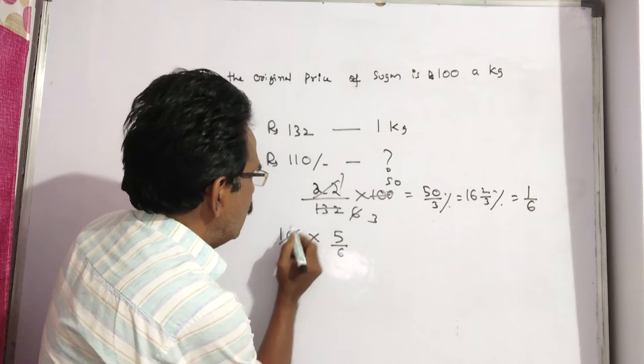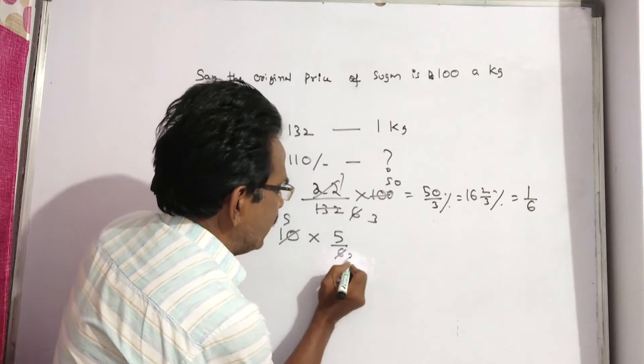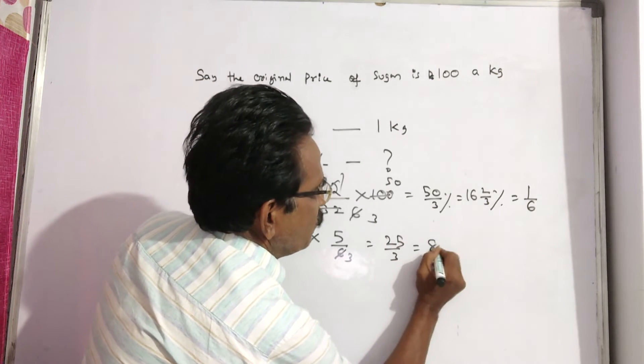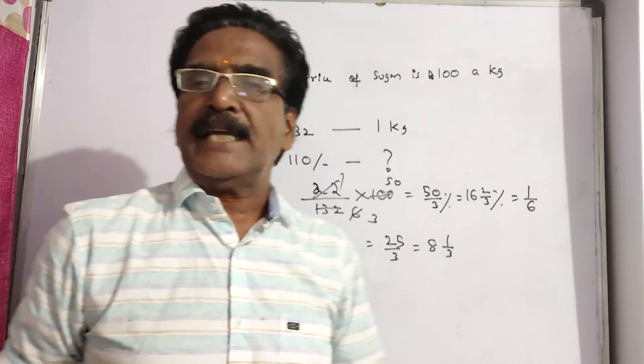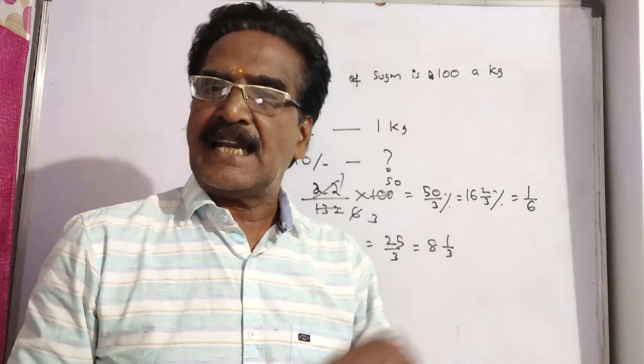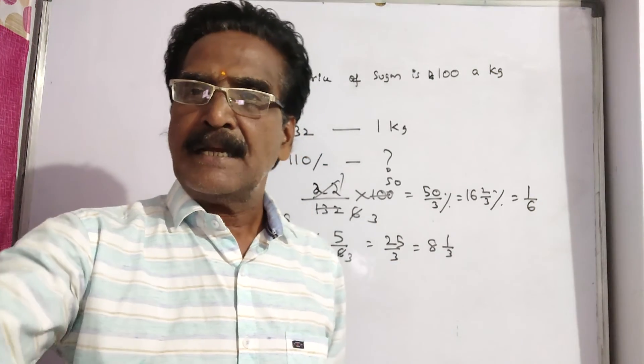So 5 by 6 times 10, that's 2 fives over 2 threes, equals 25 by 3, which is equal to 8 and 1 by 3 kgs. Now their present consumption is 8 and 1 by 3 kgs as against the earlier consumption of 10 kgs per month.